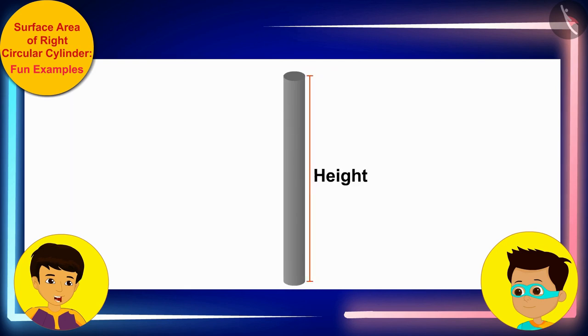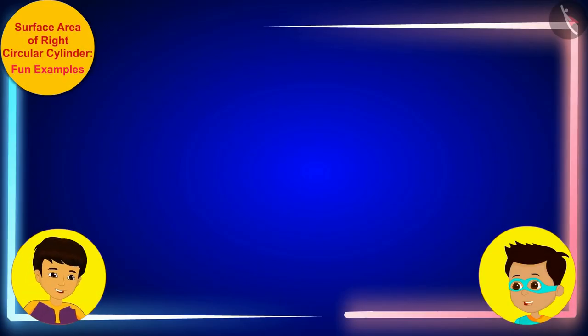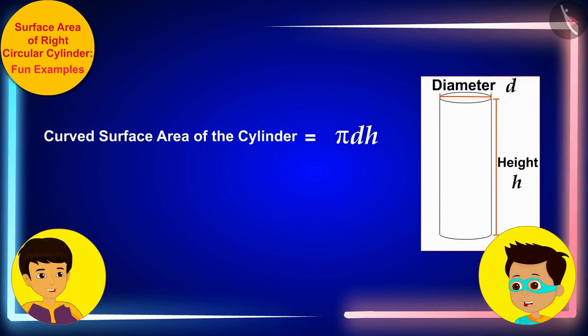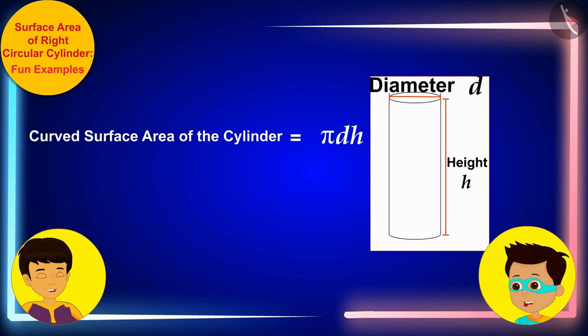The height of the pillar is 3 meters and its diameter is 35 centimeters. Thomas, do you remember the formula for the curved surface area of cylinder? Yes, Manas. The curved surface area of the cylinder is πdh, where d and h are the diameter and height of the cylinder respectively.